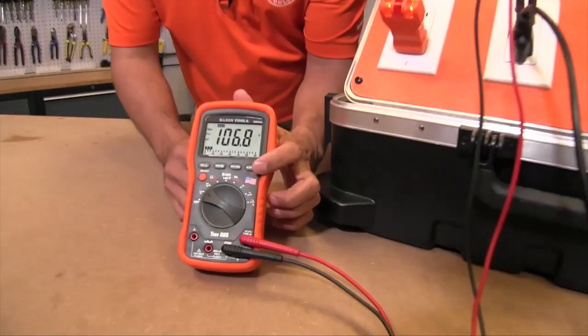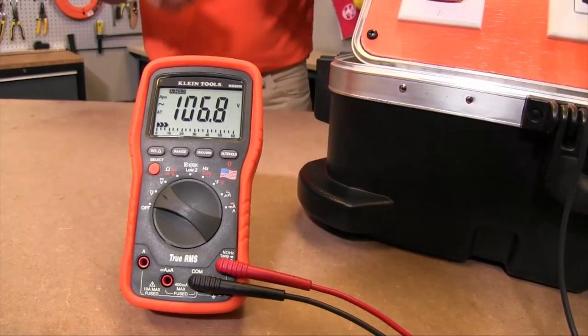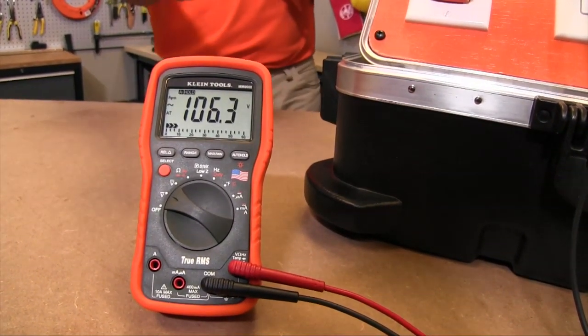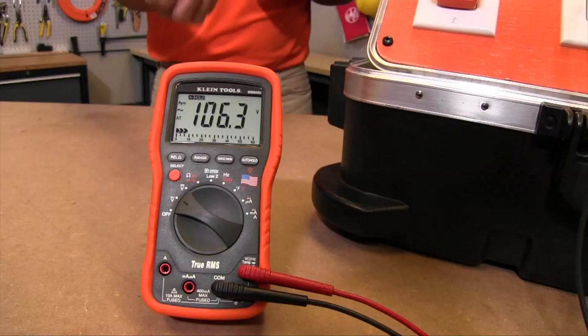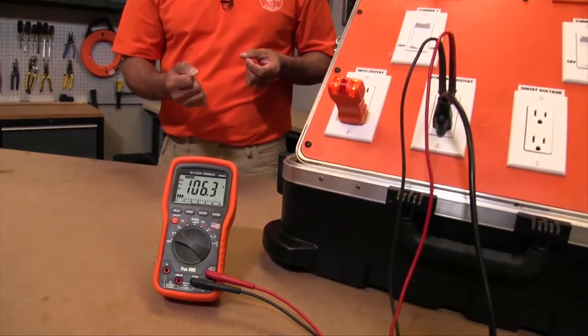I'm going to press the auto hold button. You'll see that now auto hold turns on. The difference is that now the meter is actively searching for a new signal and waiting to capture it. It's waiting to capture the most stable signal that it can.